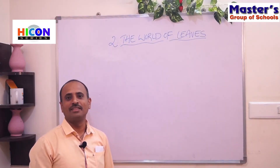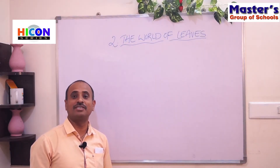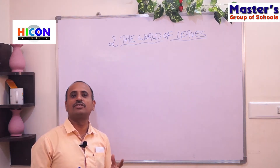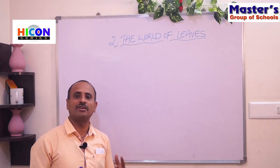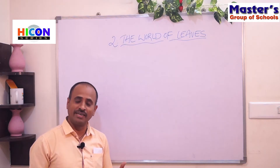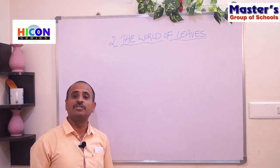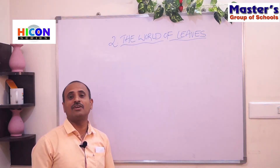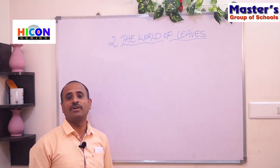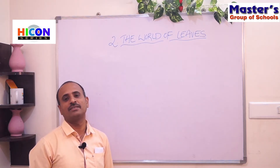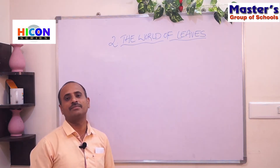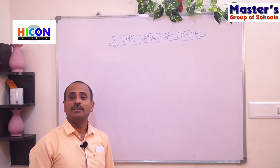Hi children, good morning. In the previous episode we discussed different types of plants — different types of terrestrial plants, that means the plants which grow in deserts, the plants of hilly areas, the plants of marshy areas, and different types of aquatic plants — the plants which grow on the surface of water and under the water, also submerged plants, and different types of insectivorous plants.